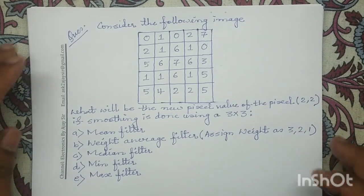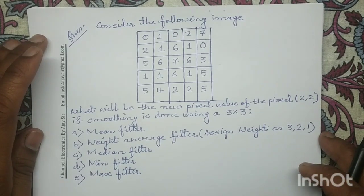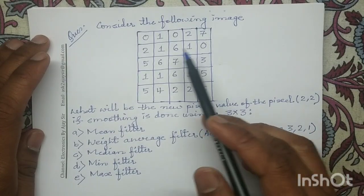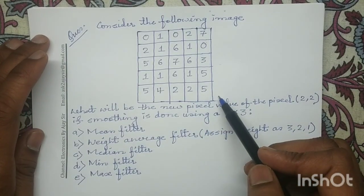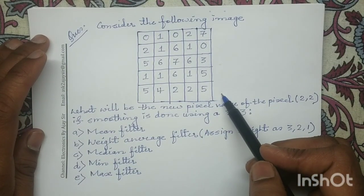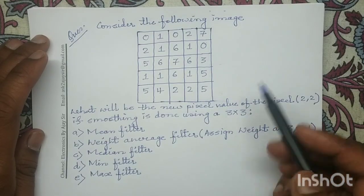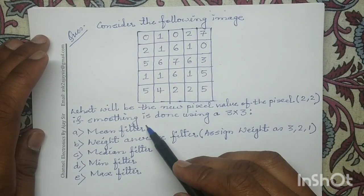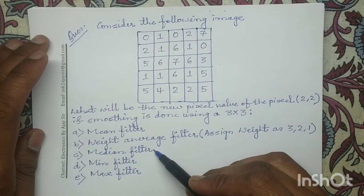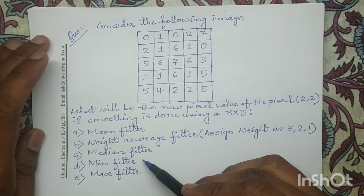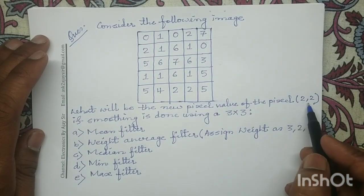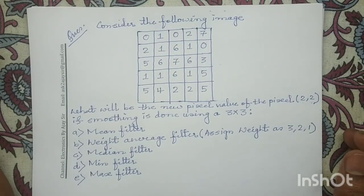Good morning all. Let us solve another question on image smoothing operations. In this question, a 5×5 input digital image is given and we have to apply a 3×3 mean filter, weighted average filter, median filter, minimum filter, and maximum filter at the pixel coordinate (2,2), and we have to determine its new pixel value.